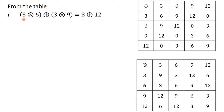The first part says we should use our table to evaluate 3 times 6 plus (3 times 9). So we have to find 3 times 6 from the table. From the table, 3 times 6 gives us 3. So the content of the first bracket, 3 times 6, gives us 3. Then we have to find 3 times 9 from the table. From the table, 3 times 9 gives us 12. So 3 plus 12.